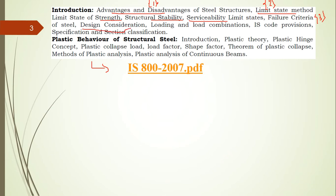Design considerations are also in IS 800:2007. Then there are loads and load combinations. The types of loads acting on a section include dead load, live load (imposed load), crane load, snow load, and dust load — all falling under imposed loads. There are also wind loads, earthquake loads, erection loads (loads during steel structure erection), accidental loads due to blast impact, and secondary effects from contraction and expansion due to temperature changes.